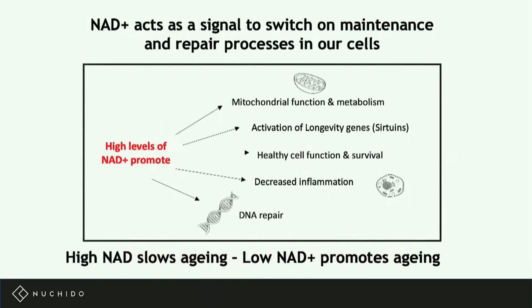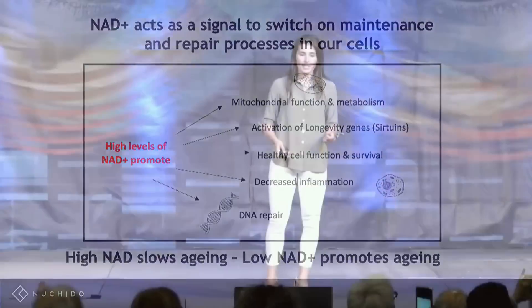To understand why low NAD levels are linked to aging, you need to look at what it's actually doing in the cell. NAD basically acts as a signal to switch on a lot of our maintenance and repair processes. When you've got high levels of NAD, you get increased mitochondrial function, activation of your longevity genes, decreased inflammation, and DNA repair.